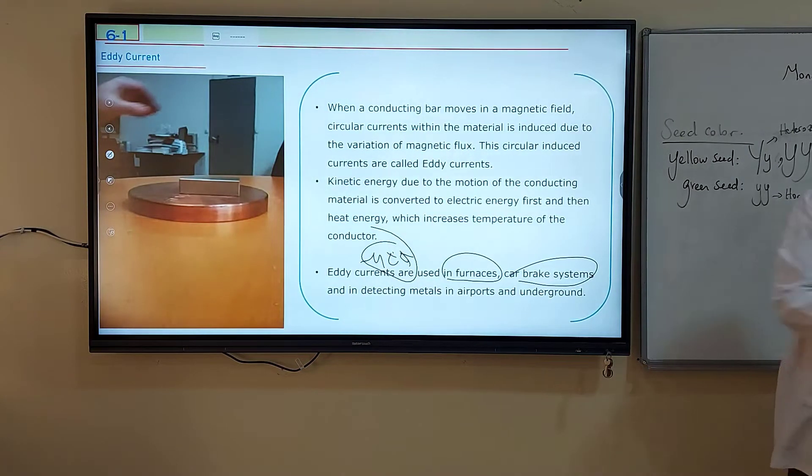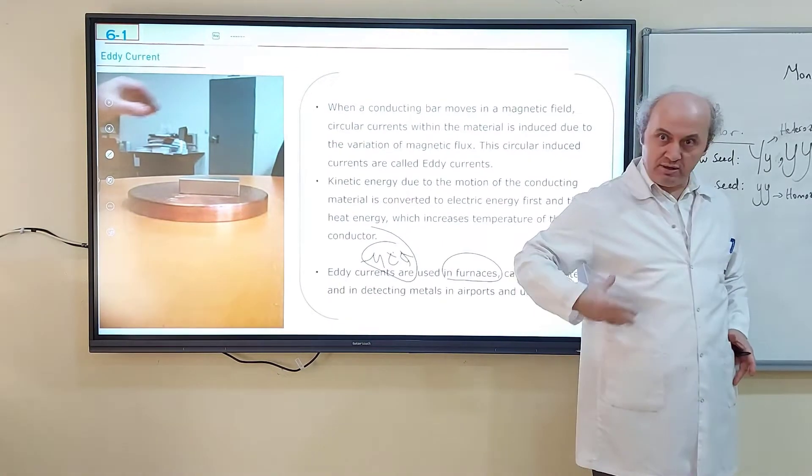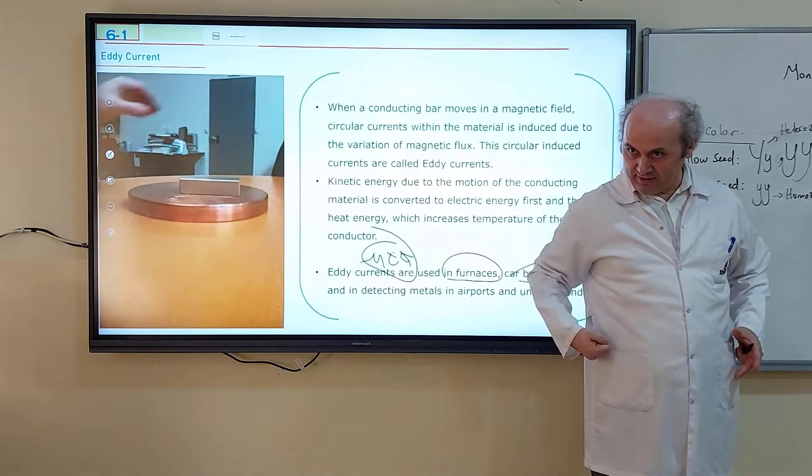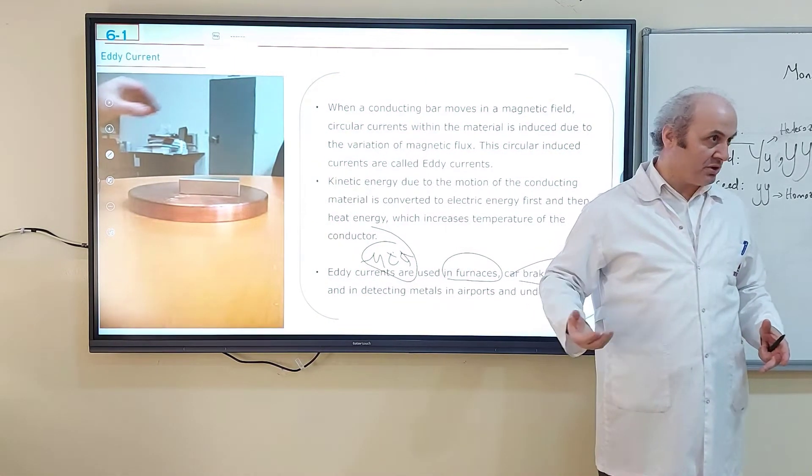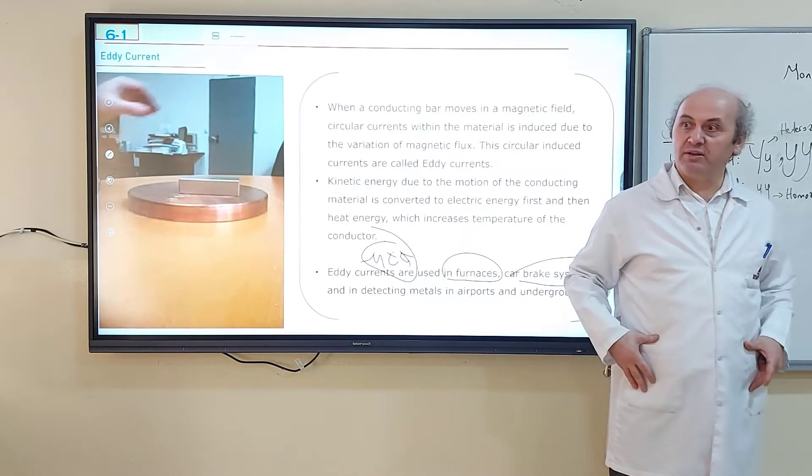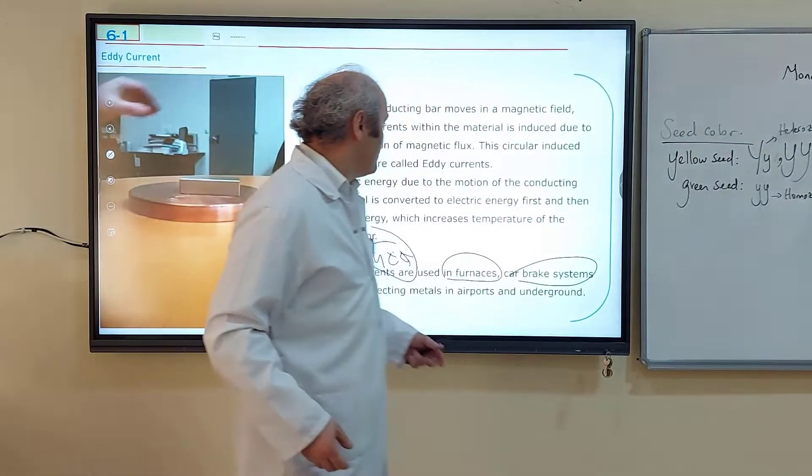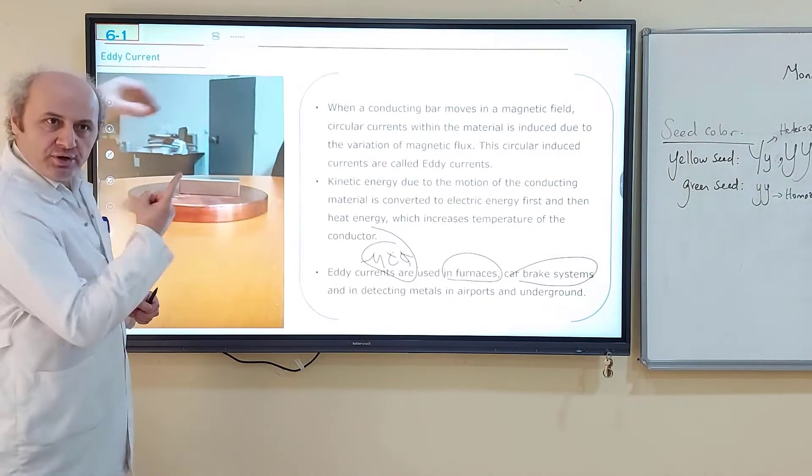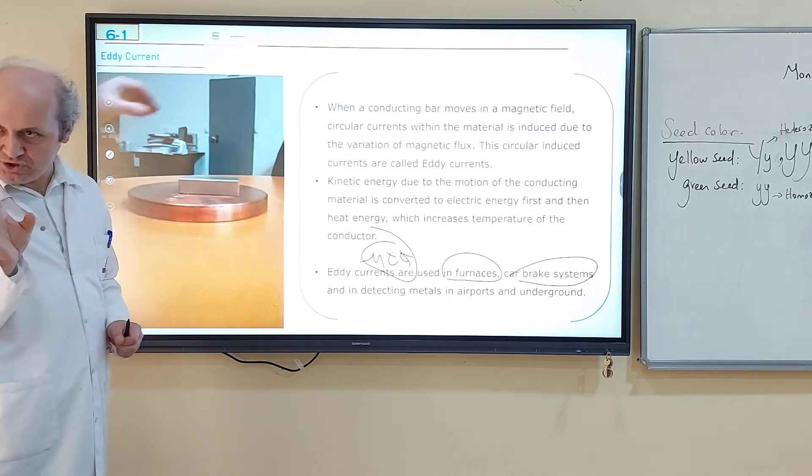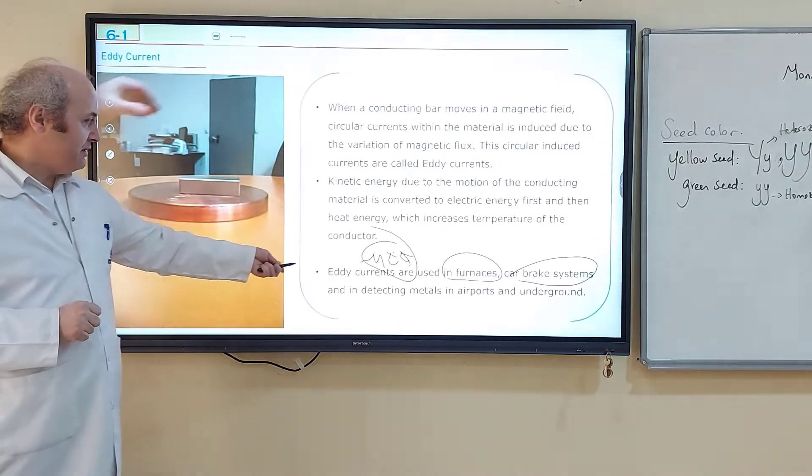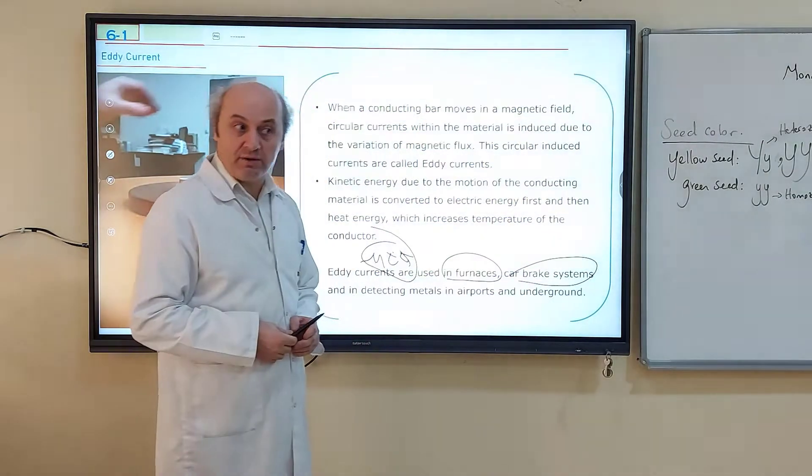In airports they are checking your body. There is a magnetic field. There is a gun. The gun's body is metal. When they make closer to the magnet, so what's happening? The gun's body produces eddy currents. And these currents are making their own magnet, and they can understand that you are carrying a gun or not, or metal object, not nylon for example. So this is what eddy current is. Swirling currents because of the change of magnetic flux to a rigid metal object. It's called eddy current used in furnaces, car brake systems, detecting metals in underground and also airports.